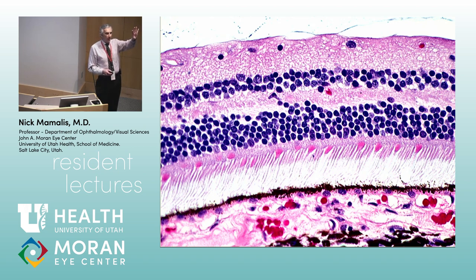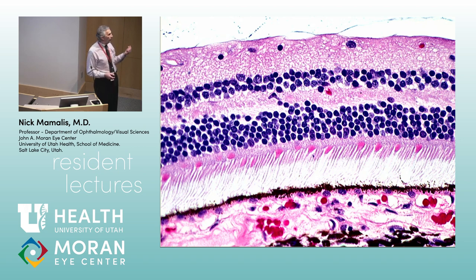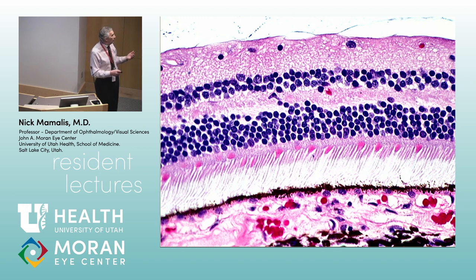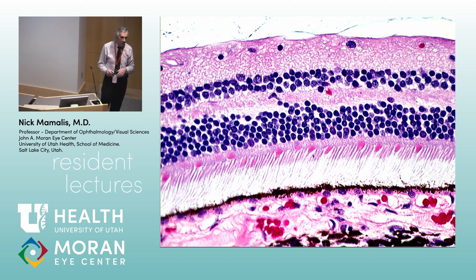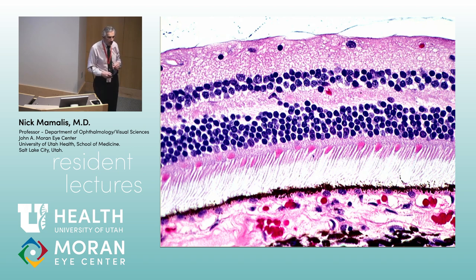Photoreceptors are amazingly active cells and take a lot of metabolism. The reason the photoreceptors are positioned deep is because they have to be close to the choroid where they get their nourishment — that's why the retina is kind of inside out, or upside down. A photon of light hits one of these areas in the outer segments.